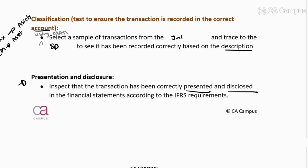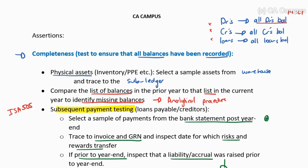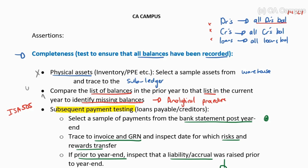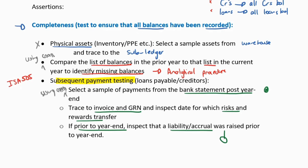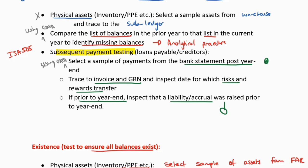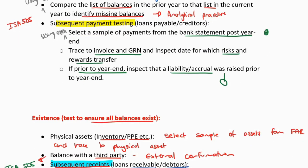Looking at account balance assertions: for completeness of a physical asset, I select a sample from the physical item and trace it to the sub-ledger — I cannot use CAATs for that because it's a physical item outside the system. However, I can use CAATs to compare the list of balances in the prior year to the current year to identify missing items. I can also use CAATs to select my sample of payments from the bank statements, as they're likely in soft copy. I will then trace it to the invoice and make sure it was raised.